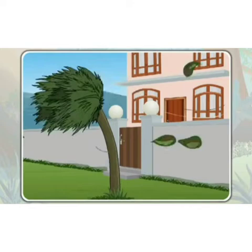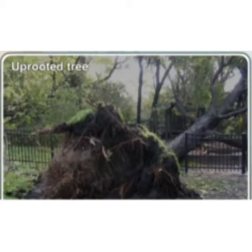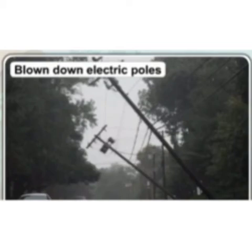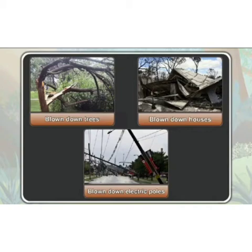Children, sometimes the storm can also uproot the trees. Sometimes the storm can also blow down houses, and sometimes the storm can also blow down electric poles too. The storm can cause great loss to life and properties. The storm is very dangerous and harmful. So we should stay safely when there is a storm.